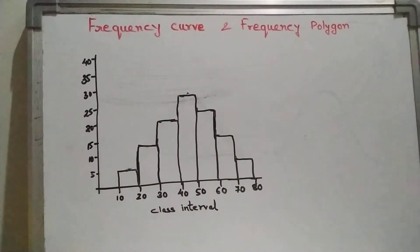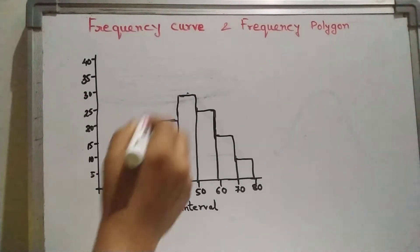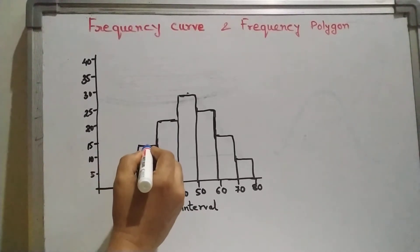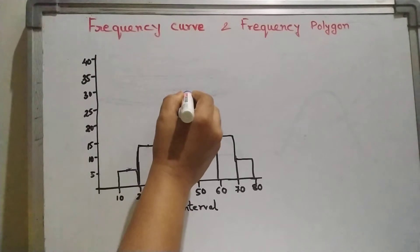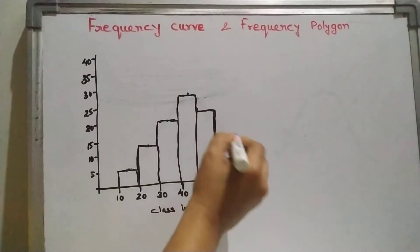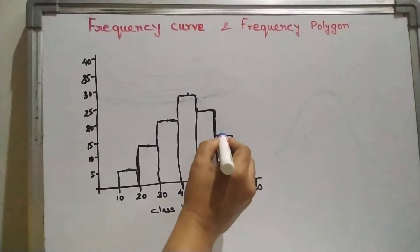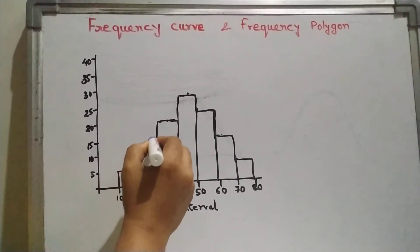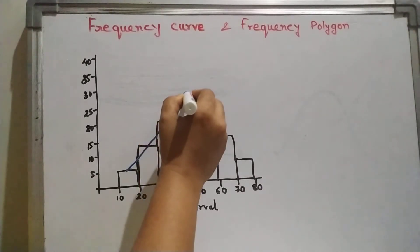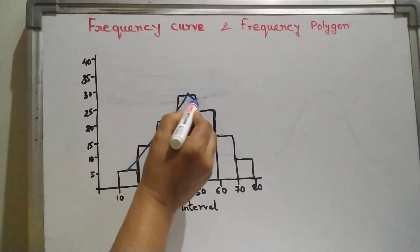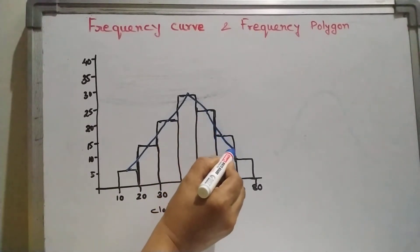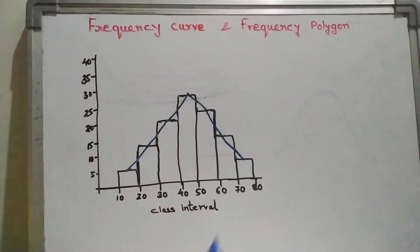First we need to plot the histogram, then take the midpoint of the top of each rectangular bar. These are the midpoints. Now if you join these midpoints with line segments, you will get a curve.